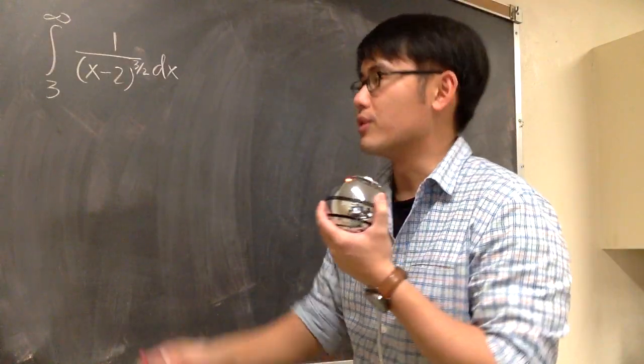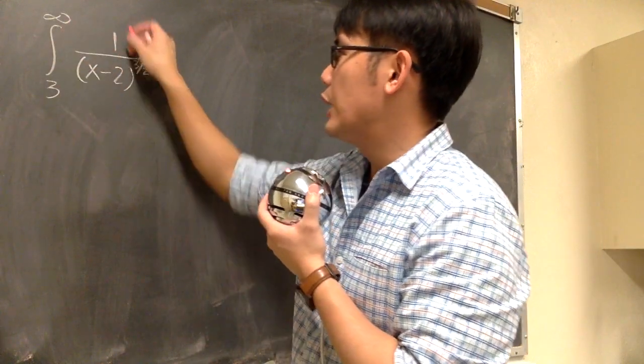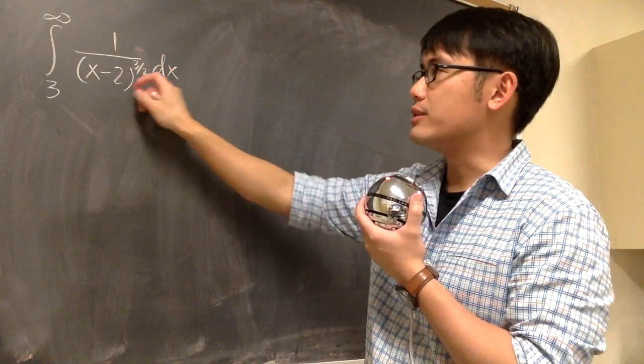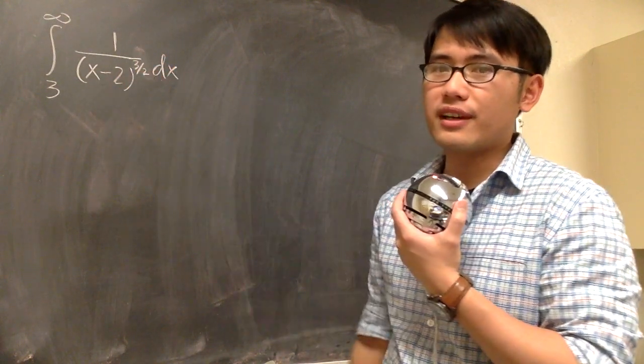We have this improper integral, the integral from 3 to infinity, 1 over x minus 2 raised to the 3 half power. This is on the denominator, and we have the dx.